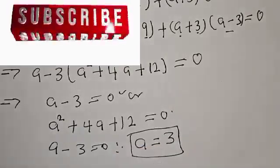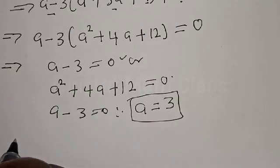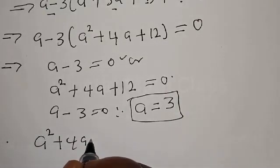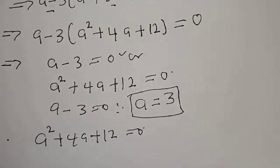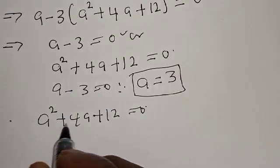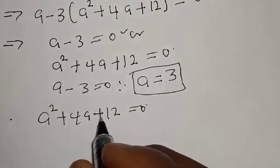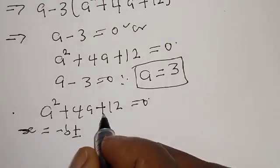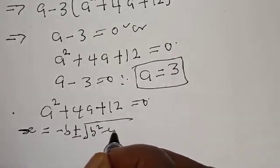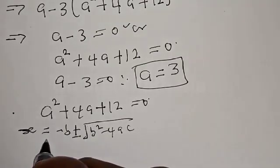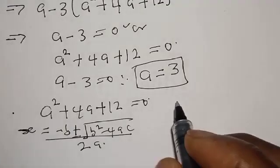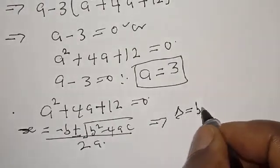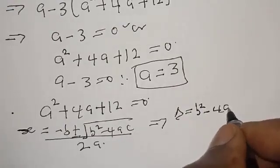That is one of the answers. Then we have A square plus 4A plus 12 equal to 0. This is a quadratic equation. We use the general formula: A is equal to minus B plus or minus square root of B squared minus 4AC, over 2A.